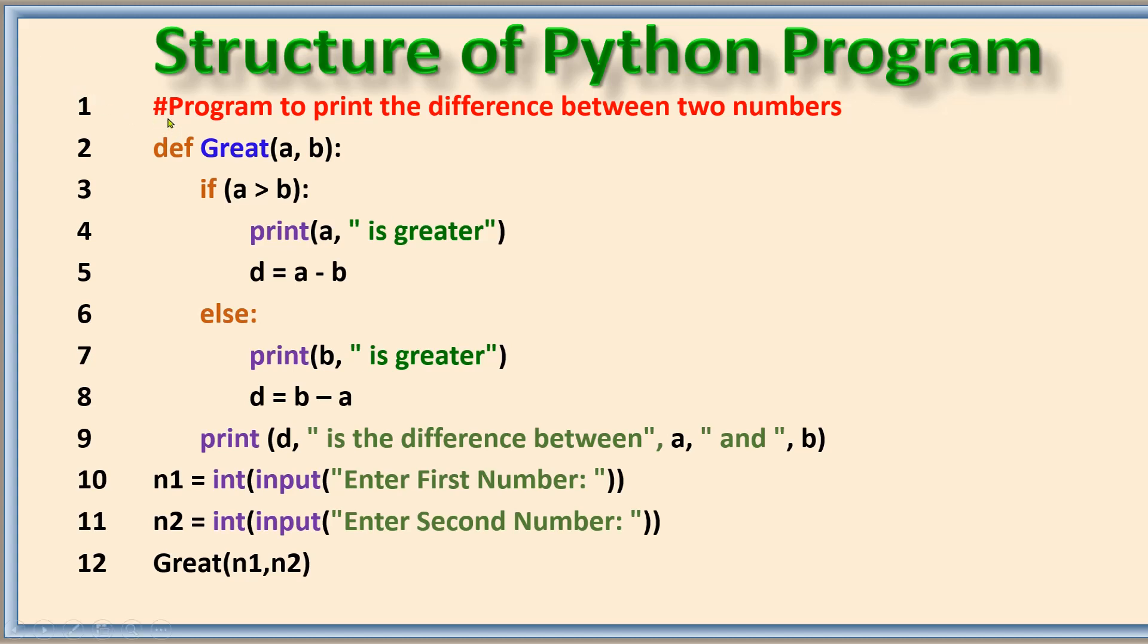Now if you see the first line, it starts with hashtag and then one line is given. This is a reference line given by the programmer to understand that particular program or some other reference. This is called comment. A single line comment always starts with hashtag. Comment can also be given in the middle of the program after the code. This is called inline comment.